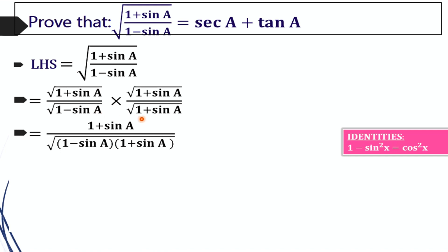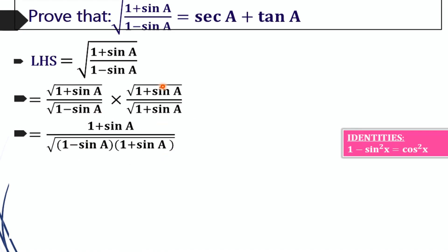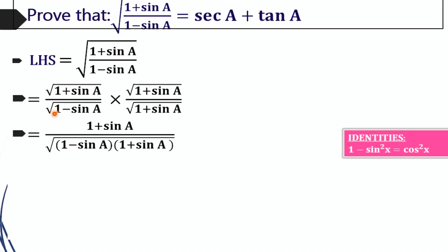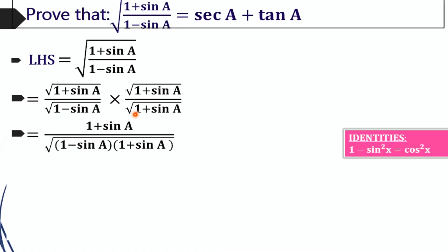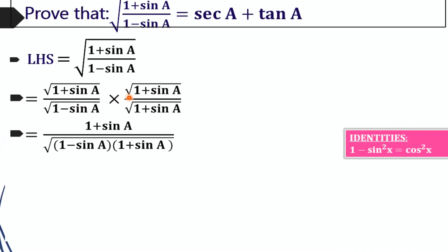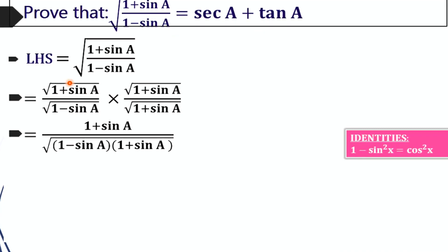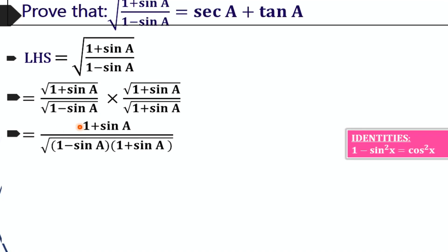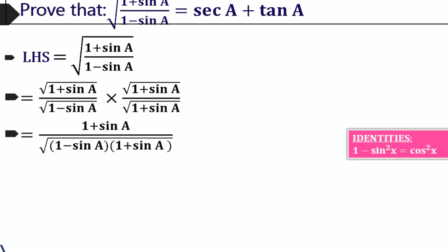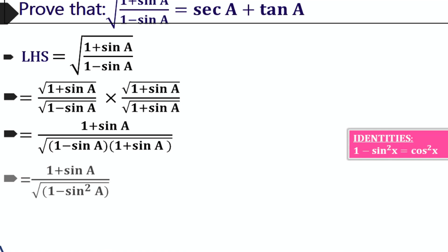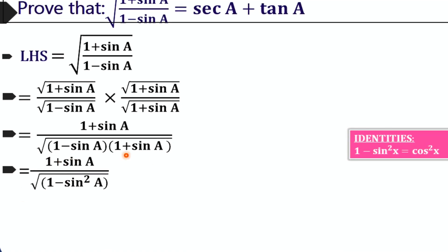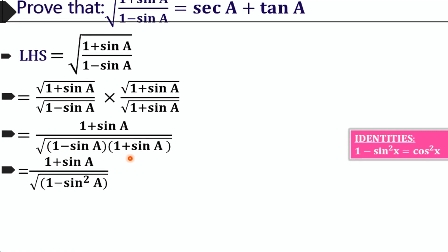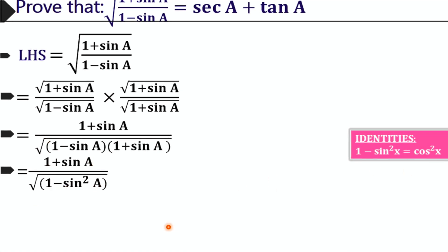Square root of (1 minus sin A) into (1 plus sin A) gives the denominator term. We are multiplying by square root of (1 plus sin A) because we can more easily reach the RHS from the numerator. Now, (1 minus sin A)(1 plus sin A) equals 1 minus sin squared A, which is cos squared A.